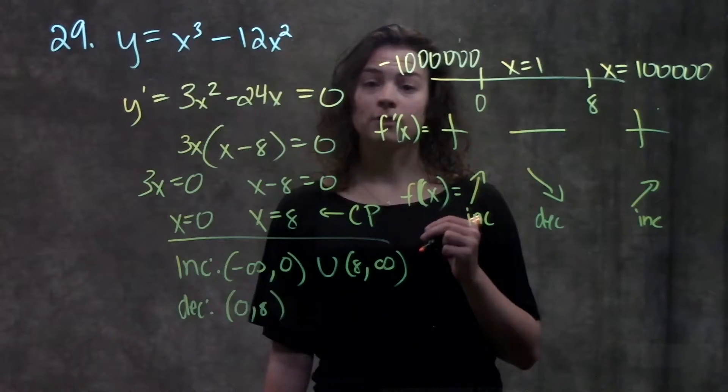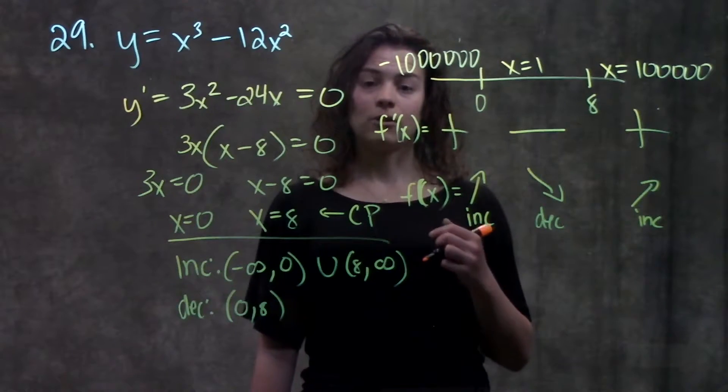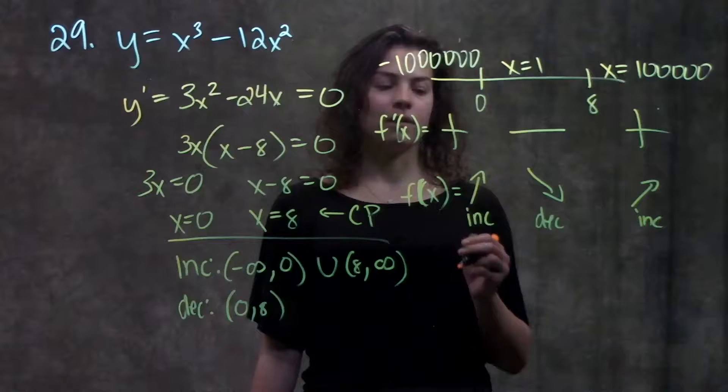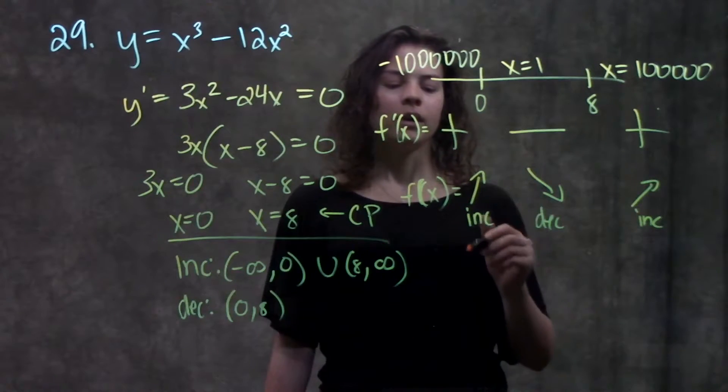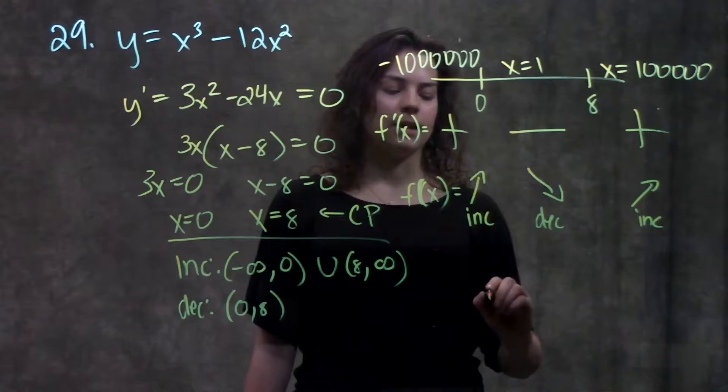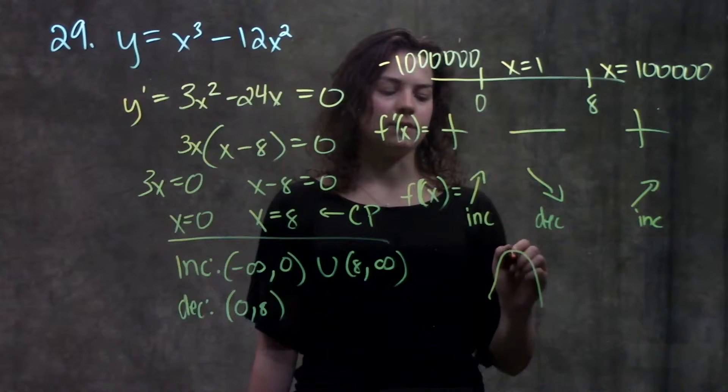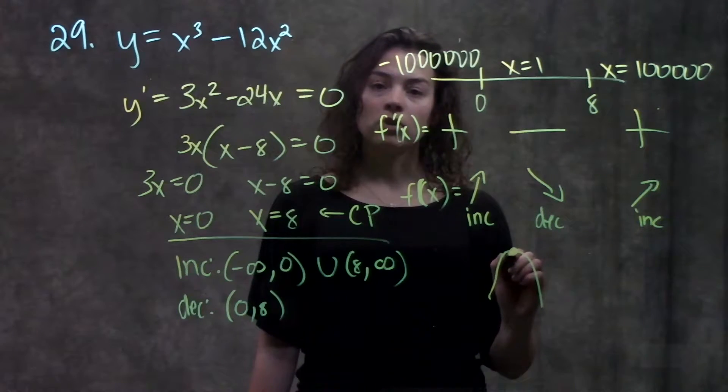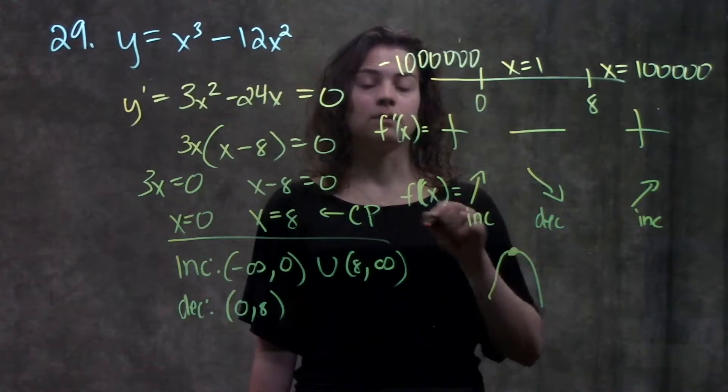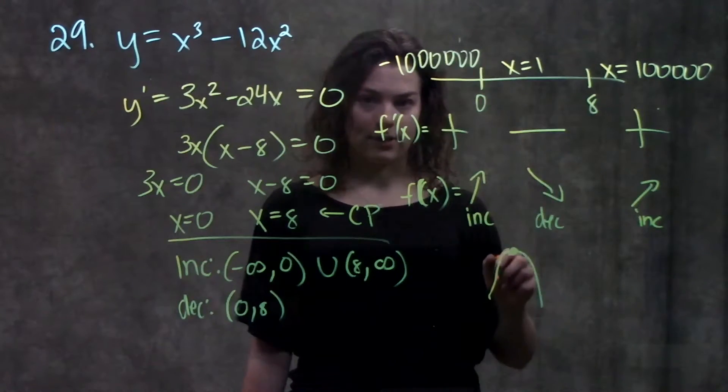The third thing they're asking me is for the min and max values. In order to determine where the min and max values are, I can just look at this chart that I made. Since I know the function is going from increasing to decreasing at this value, I know that this critical point, zero, has to be a max, because the function is going from increasing to decreasing.